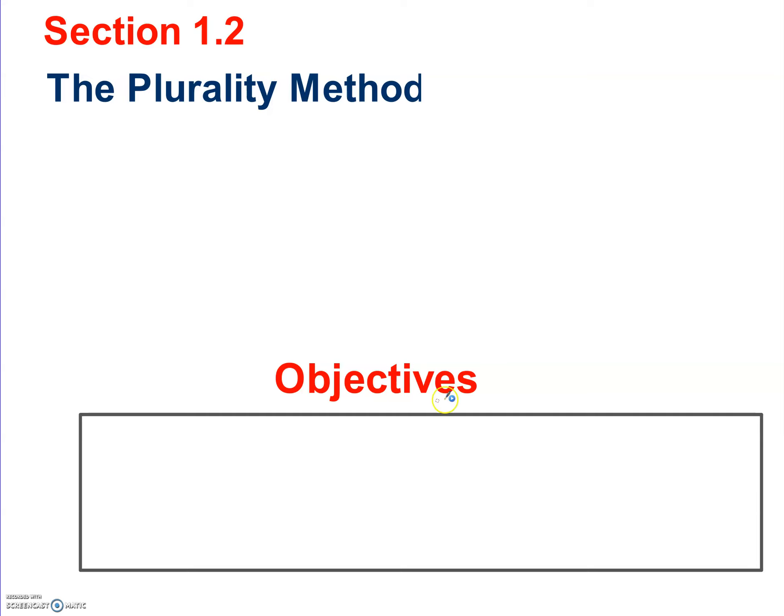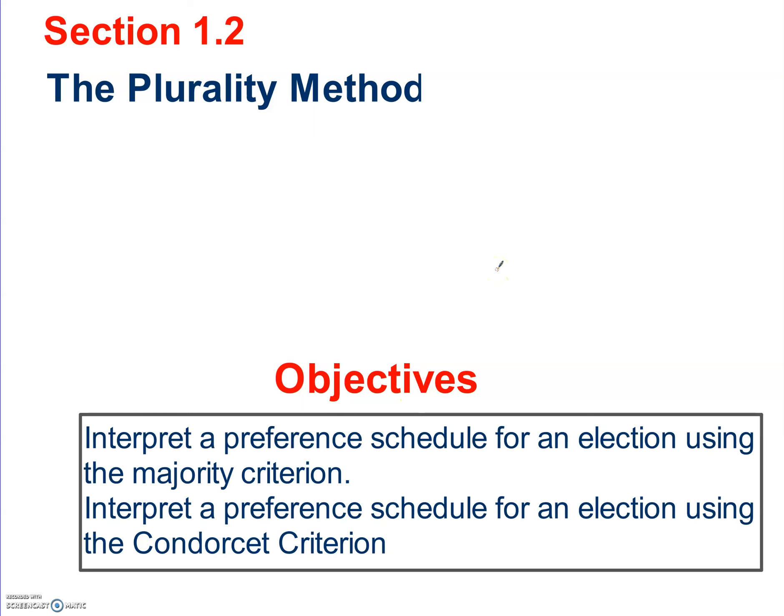Here are the objectives for these videos. You should be able to interpret a preference schedule for an election using the majority criterion — meaning figure out who is the winner using the majority criterion. Then you should be able to determine who's a winner using the Condorcet criterion. That's how you say that word: Condorcet criterion.